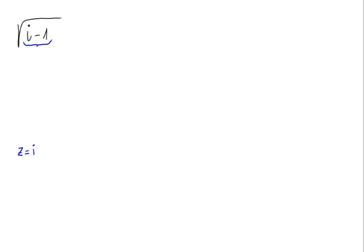The complex number is i minus 1. The real part is minus 1, and the imaginary part is 1 times i. The point associated to this complex number is the point P at coordinates minus 1, 1.